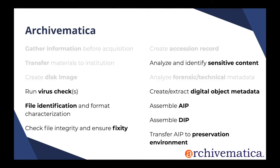Archivematica is an open source digital preservation system that packages together multiple open source tools to aid in the preparation of archival information packages and dissemination information packages. Archivematica includes functionality for running virus checks, identifying file types, checking file integrity, identifying sensitive content, creating digital object metadata, assembling archival and dissemination information packages, and transferring packages to a preservation environment.